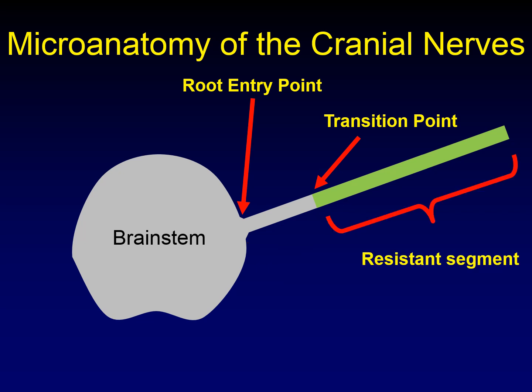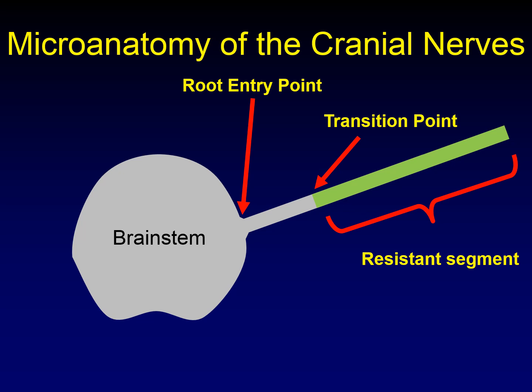If that's the susceptible segment close in, the rest of the cisternal segment of the cranial nerve is the resistant segment — that's the part surrounded by Schwann cells. Let's explain why we use those terms: susceptible and resistant.